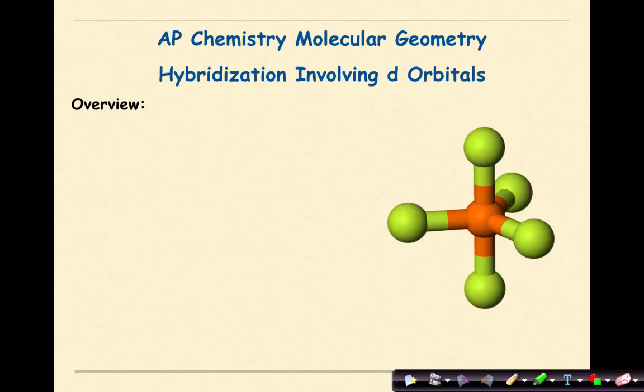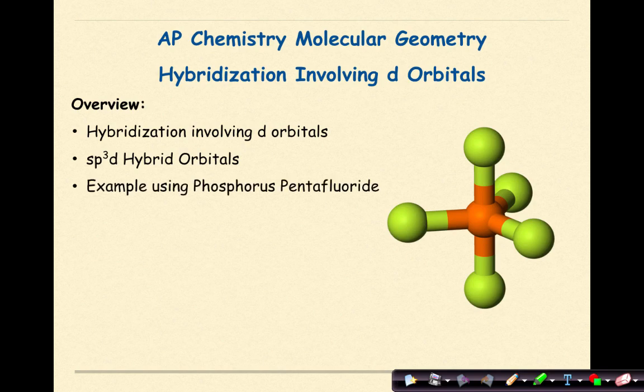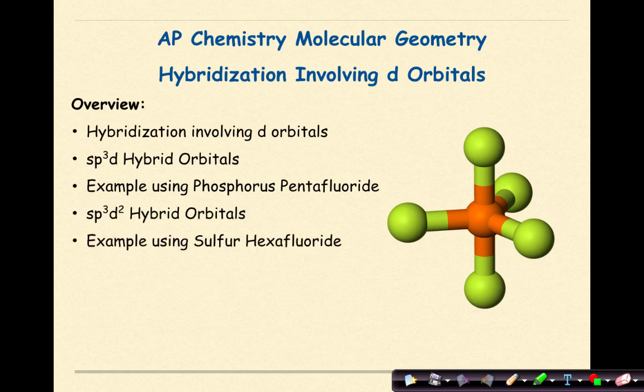AP Chemistry Molecular Geometry, Hybridization Involving D-Orbitals. Specifically today, we're going to be looking at hybridization involving D-orbitals, SP3D hybrid orbitals, an example using phosphorus pentafluoride, SP3D2 hybrid orbitals, and an example using sulfur hexafluoride.